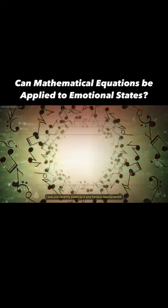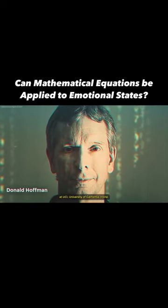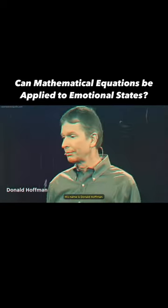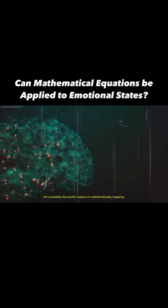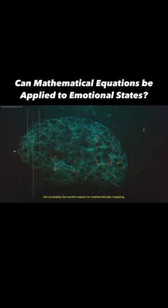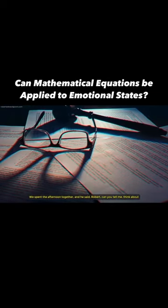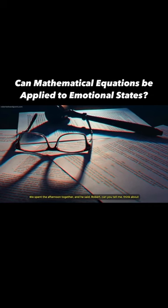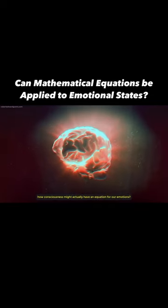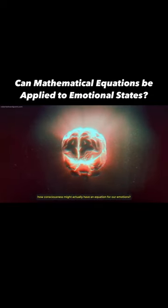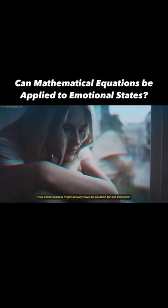I was recently asked by a neuroscientist at UCI, University of California Irvine—his name is Donald Hoffman. He's probably the world's expert on mathematically mapping human consciousness. We spent the afternoon together and he said, 'Can you tell me, think about how consciousness might actually have an equation for our emotions?'